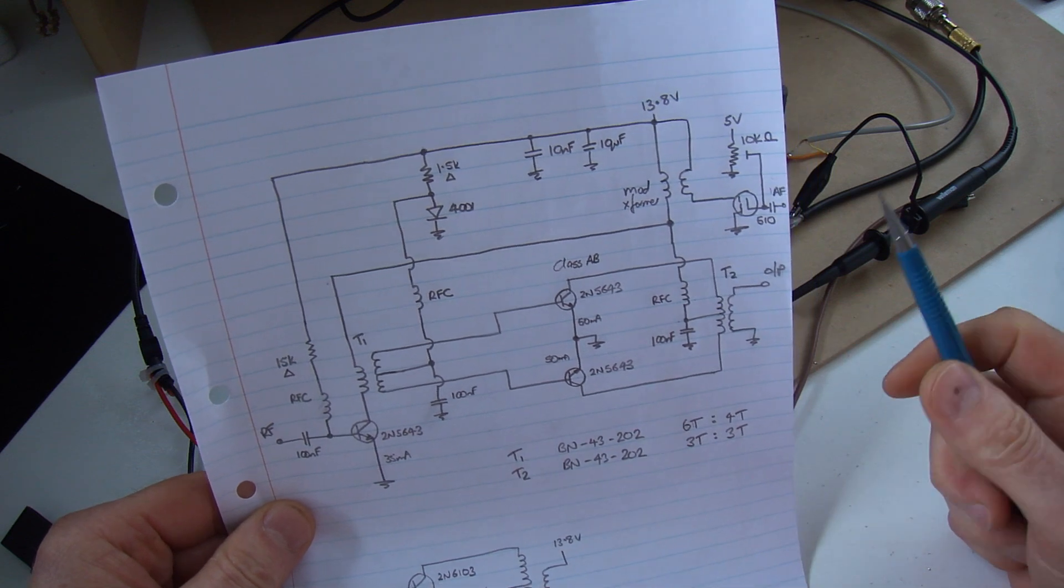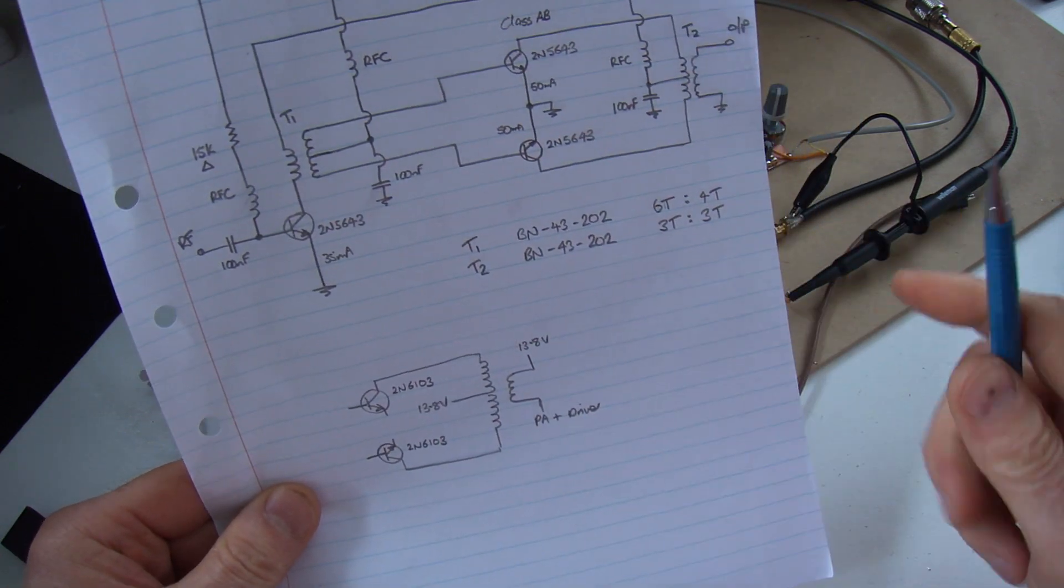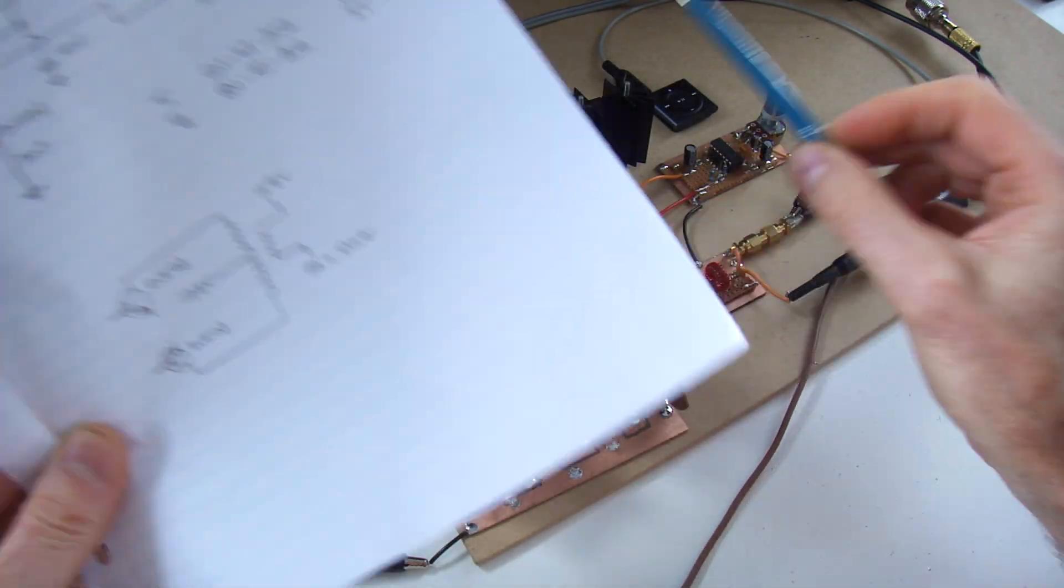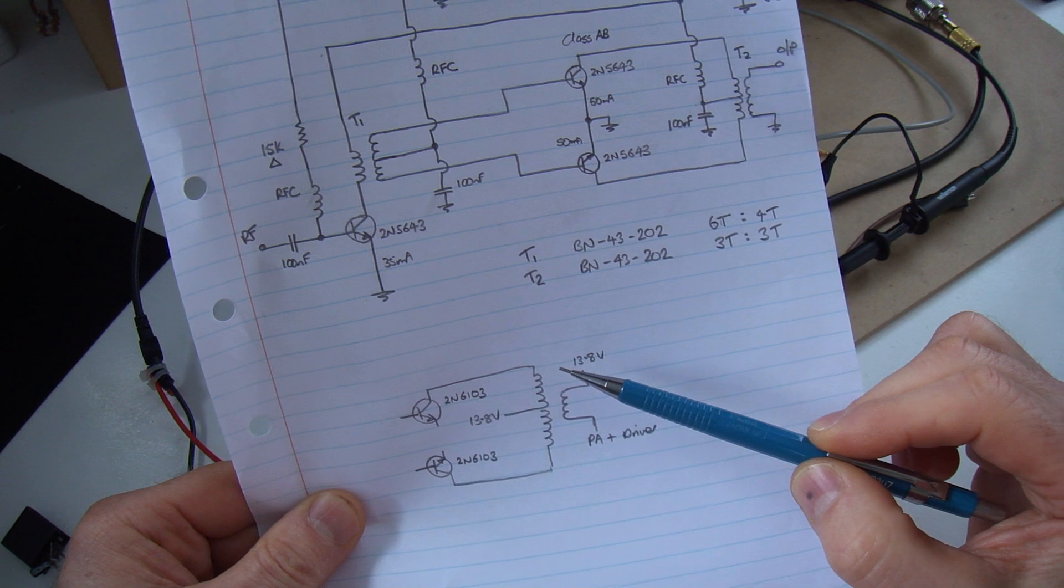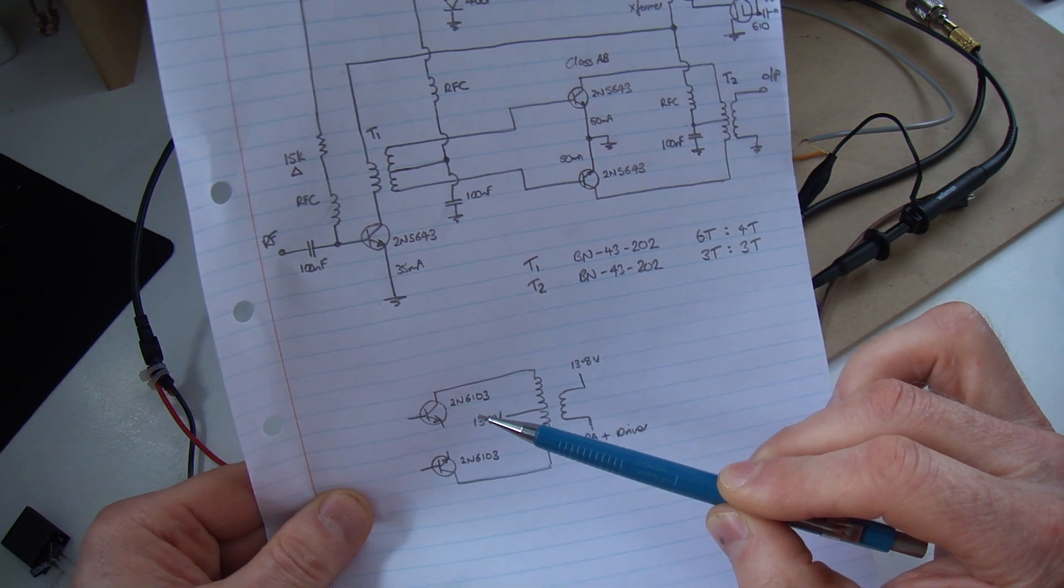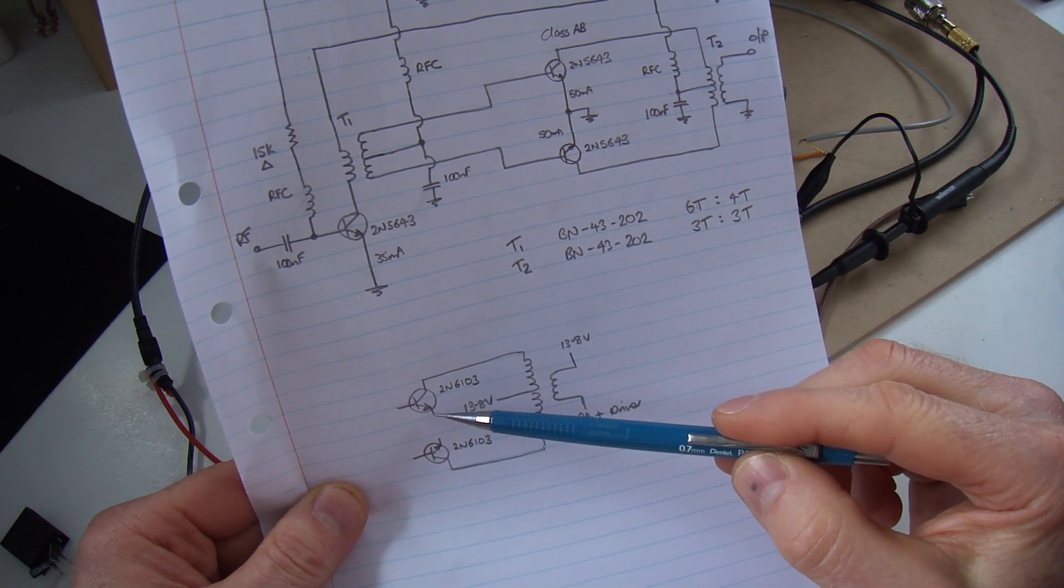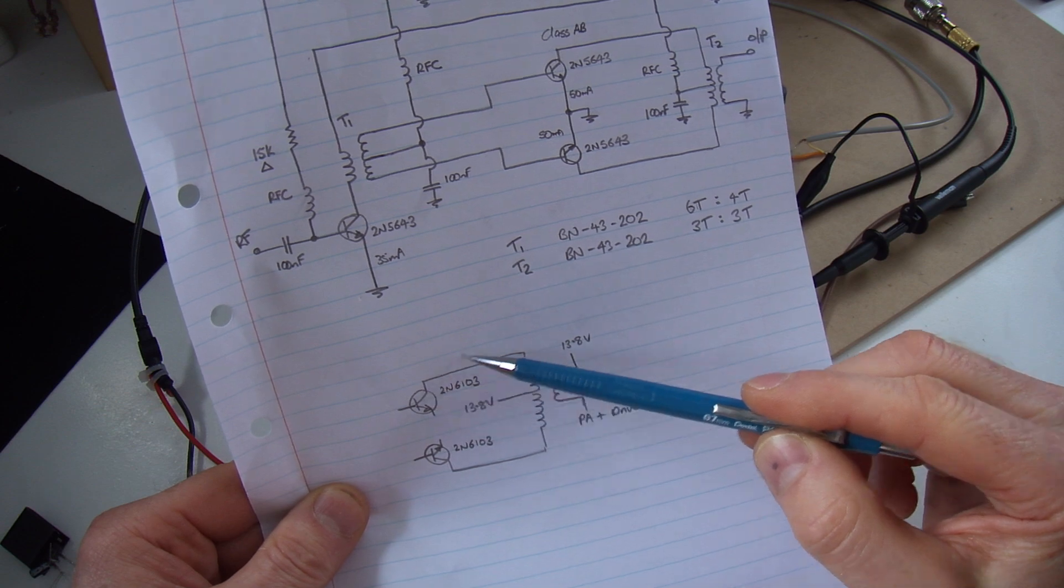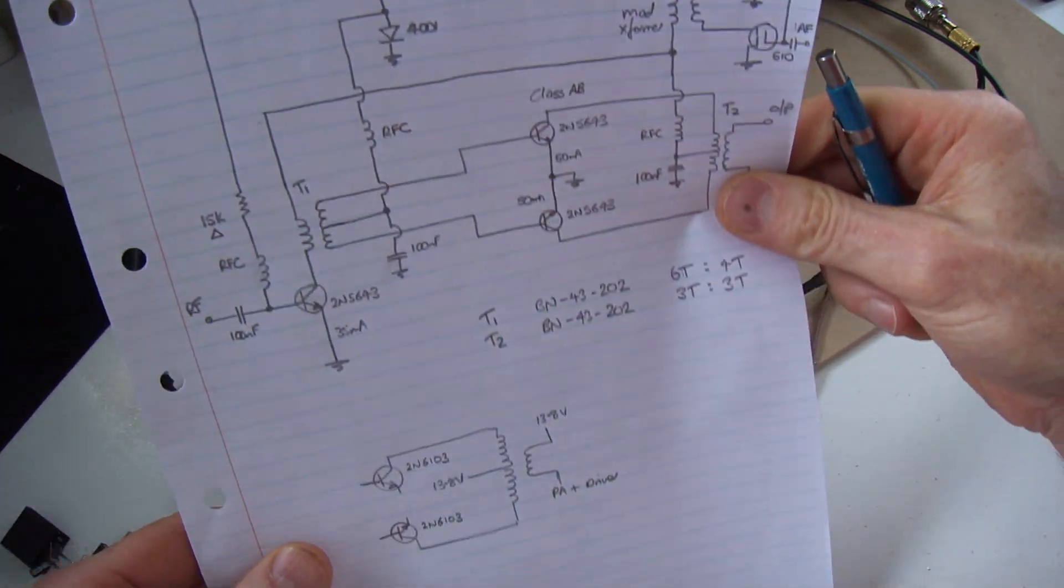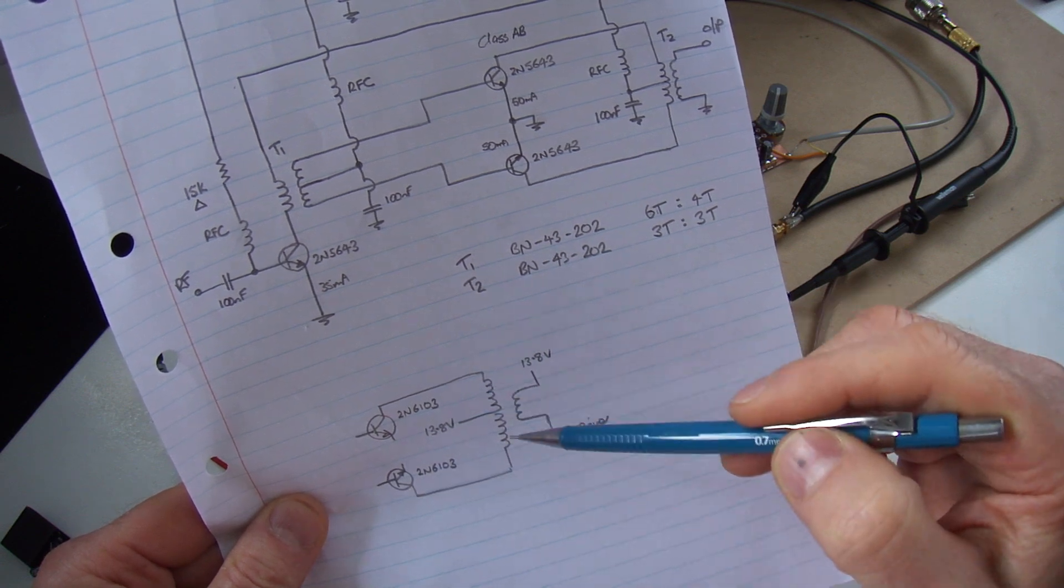So what did I find when I had a look at that old Tate radio? For interest sake, the modulation transformer, that's that big one over here, the secondary windings had two secondary windings that were being driven by a push-pull audio amplifier using two N6103s.